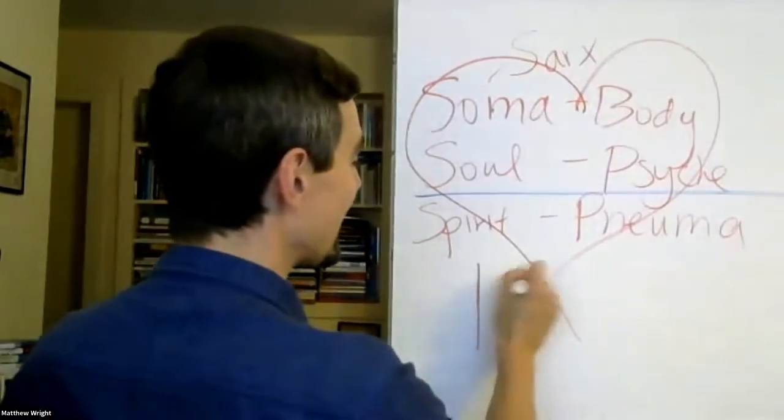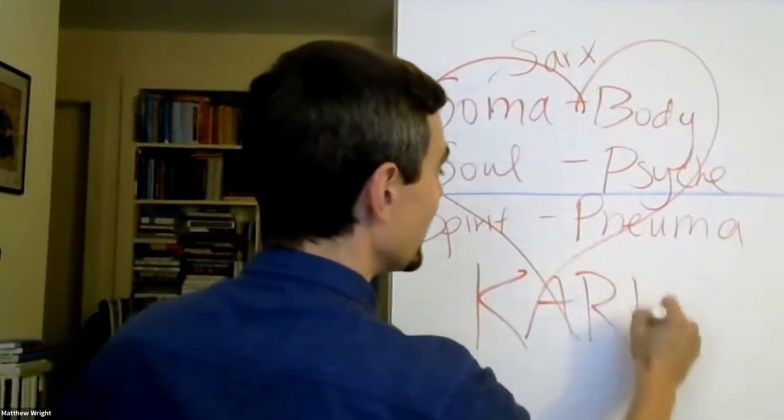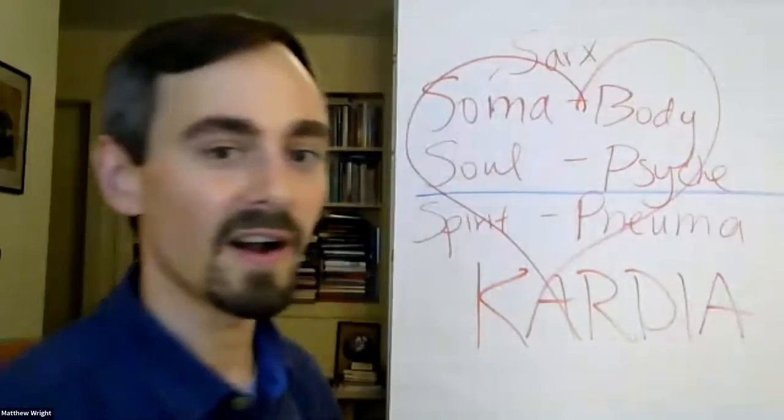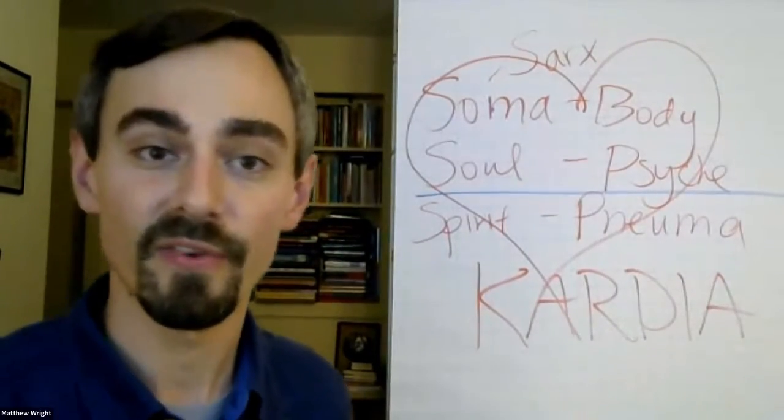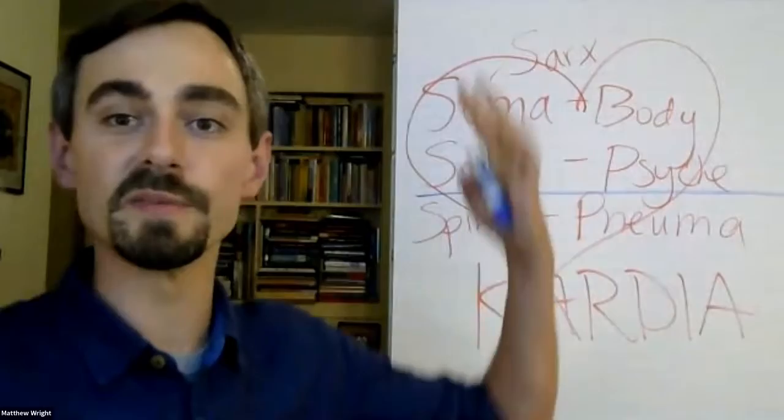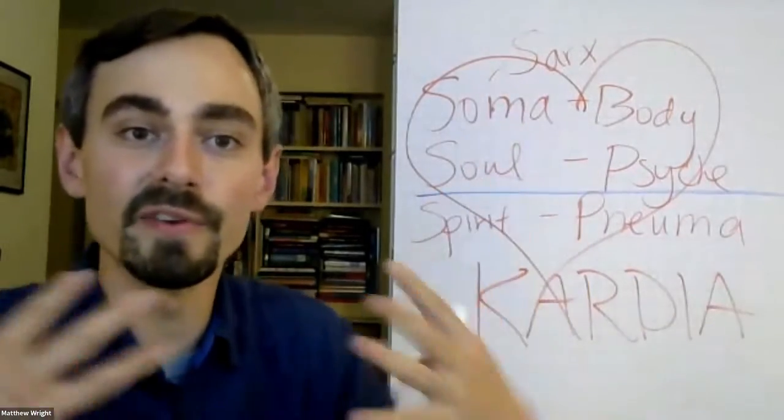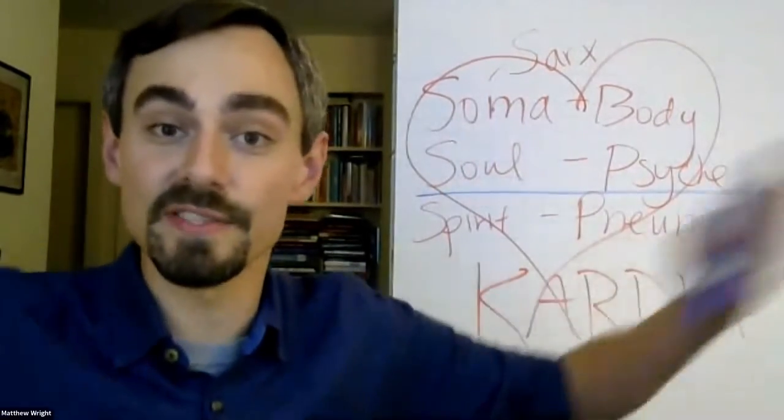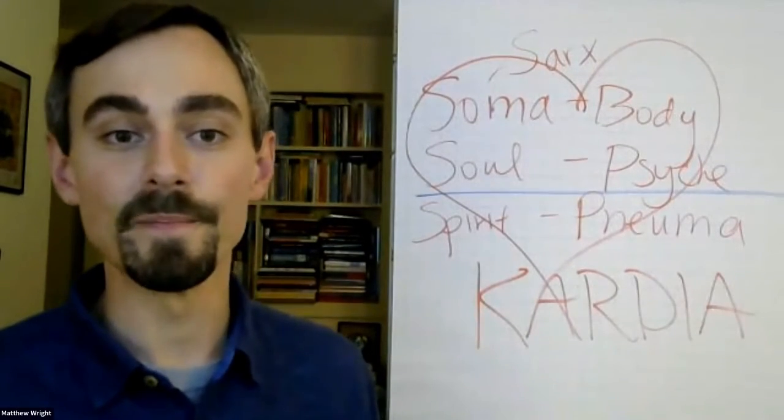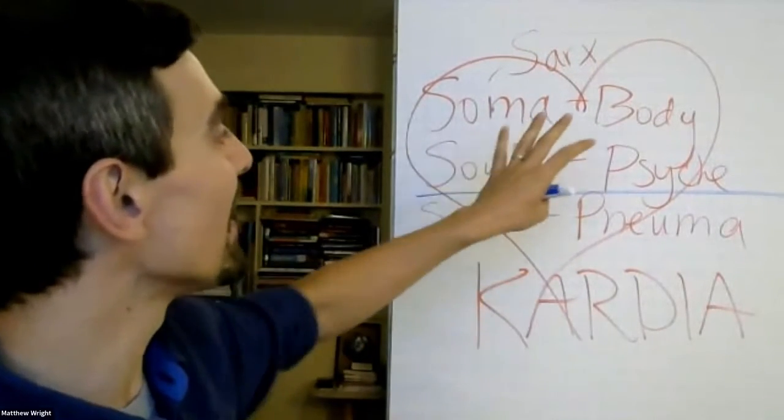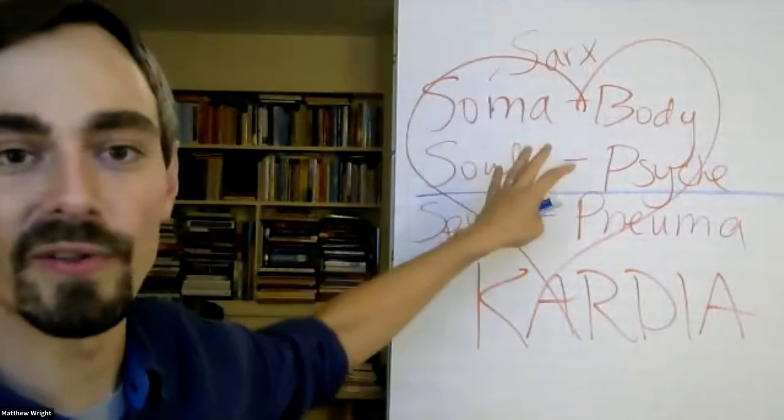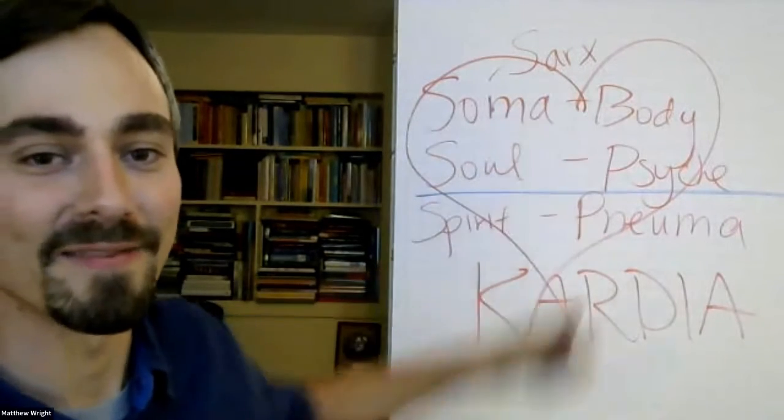So then we get kardia, the heart. So the heart is the human person in its fullness. When body, soul, and spirit are an integrity, are a unity, the heart of God manifests through that unity. So I would say that's what heart is. Heart is the fullness of the human person fully alive.